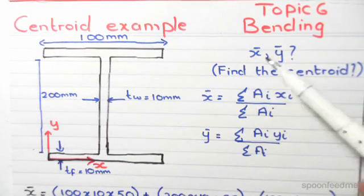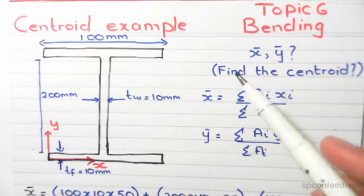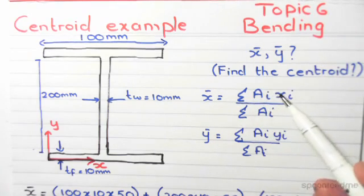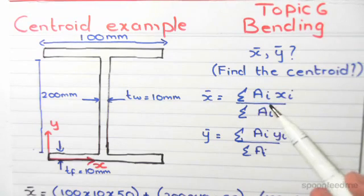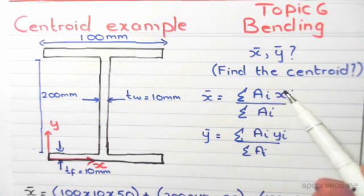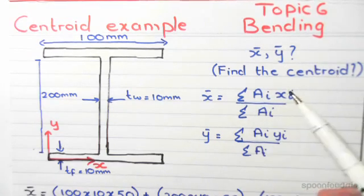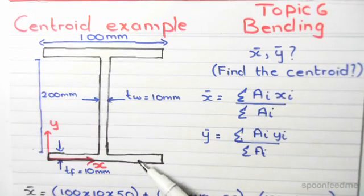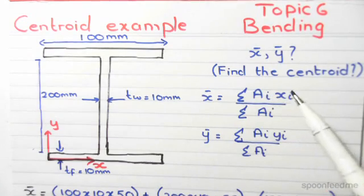So how do we work out x̄? x̄ is the sum of Ai times xi divided by the sum of Ai. In this, i means individual elements, so it's the sum of all the individual elements. Ai is the area of one element times xi.